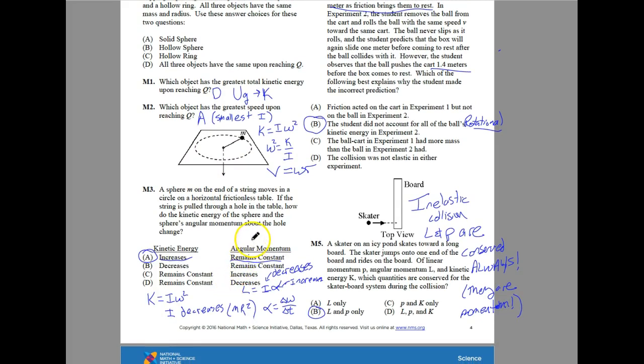Number three: a sphere M on one end of a string moves in a circle on a horizontal frictionless table. If the string is pulled through the hole in the table, how do the kinetic energy of the sphere and the sphere's angular momentum about the hole change? The kinetic energy will increase because our I will decrease because our R is decreasing. We're using MR squared here because we're using a point mass. So this string is basically not going to account much for the angular momentum or for the I value here of the system.